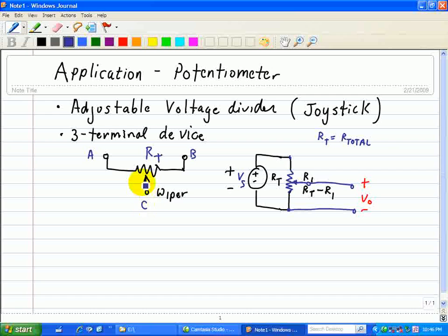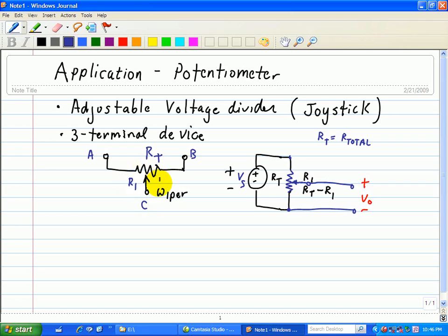In the middle is known as the wiper, which adjusts the resistance such that you have R1 right here and then RT minus R1 on the other side.